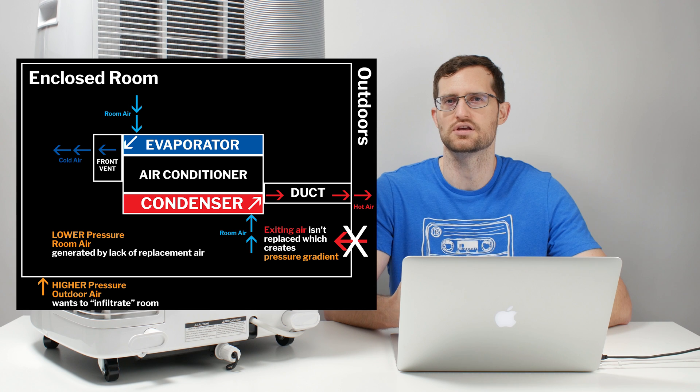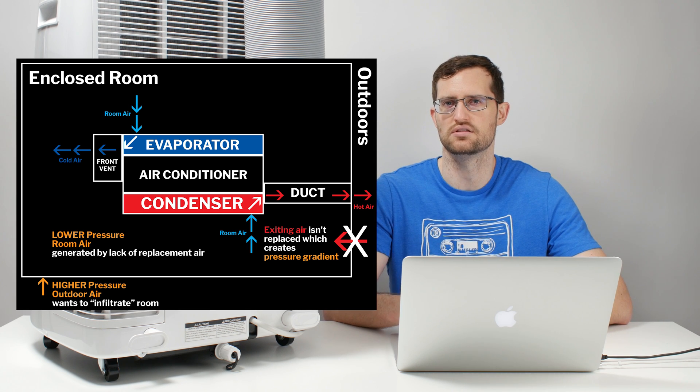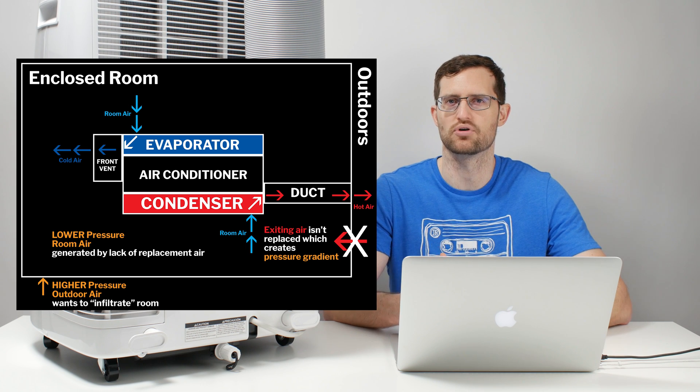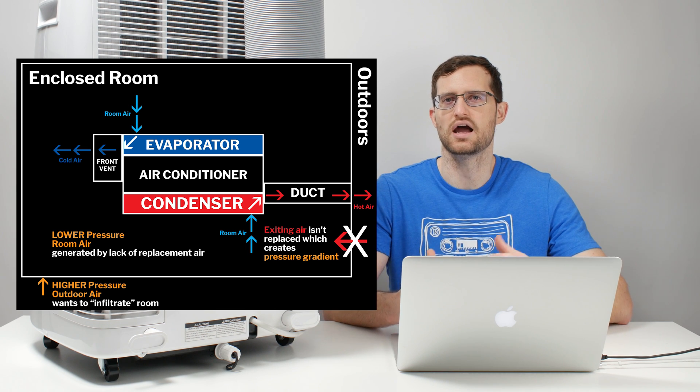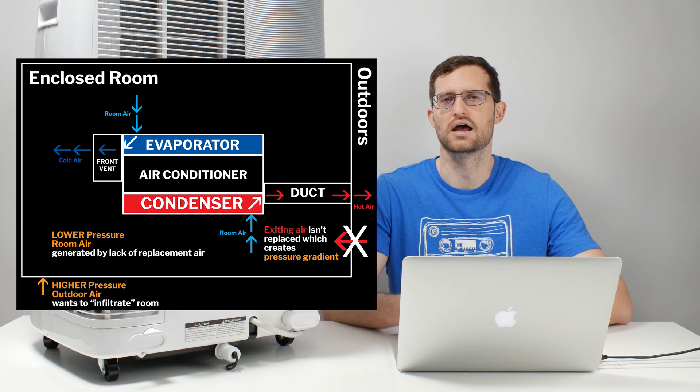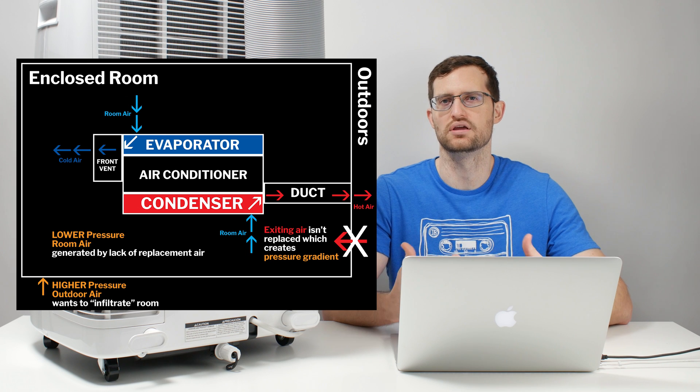So what ends up happening is you create an area of low pressure inside of the room. And by comparison, the outdoor air is at a much higher pressure. So what ends up happening is that the hot outdoor air is constantly wanting to get pulled into the room due to that pressure gradient that's created. And that hot outdoor air is called infiltration air.